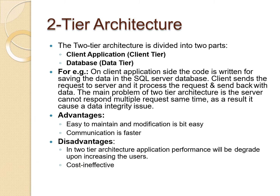The two-tier architecture is divided into two parts: client application and database. On the client application side, the code is written for saving data in an SQL Server database. The client side sends the request to the server, the server processes the request and sends back the data. The main problem of two-tier architecture is that the server cannot respond to multiple requests at the same time.